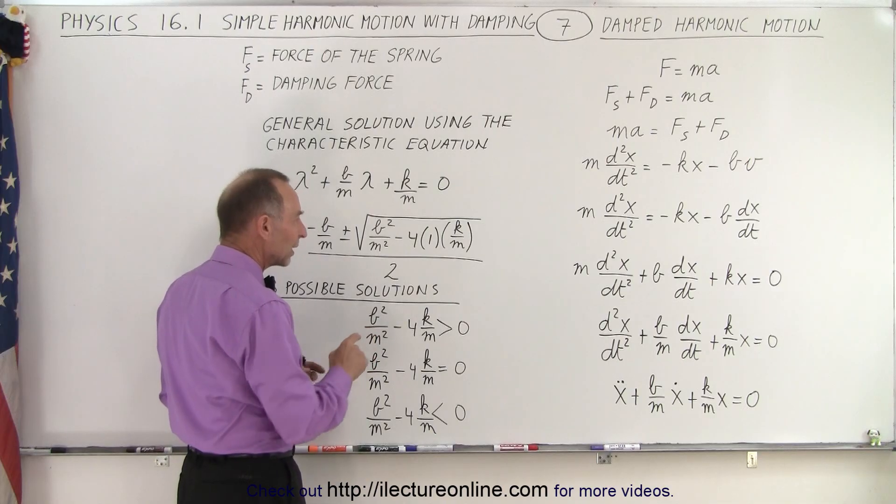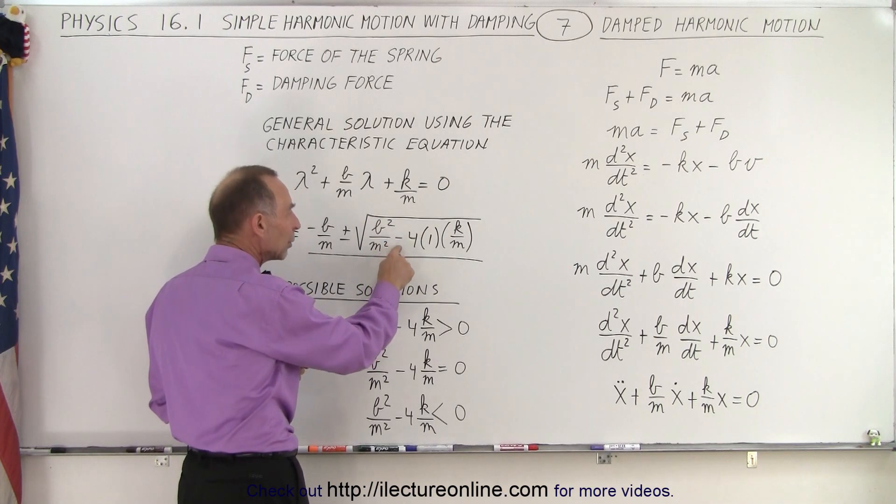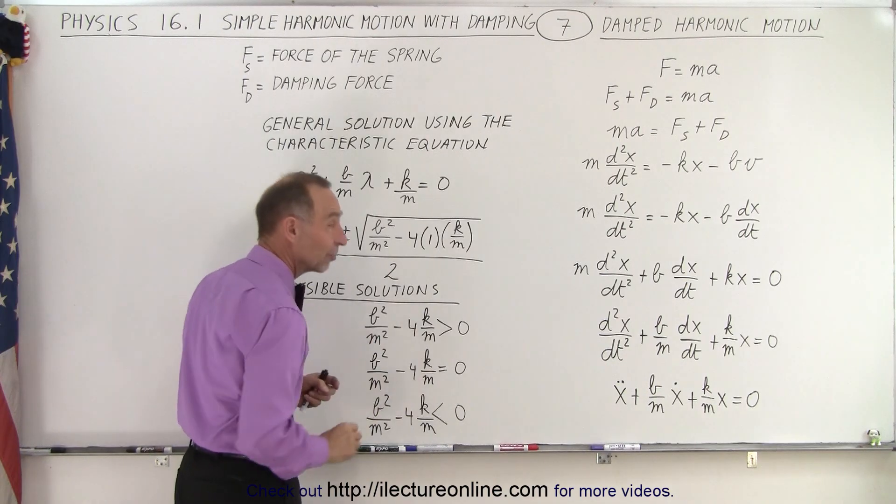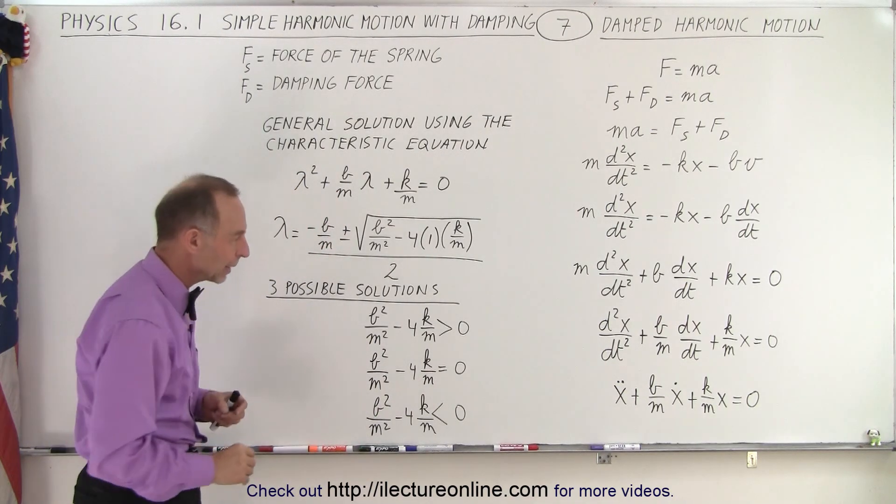If B is a little bit smaller in such a way that B squared over M squared is equal to 4K over M, then we have this situation right here, where the difference is zero. They call that critical damping.